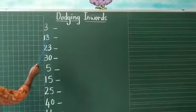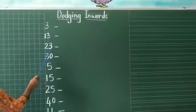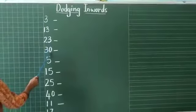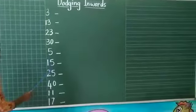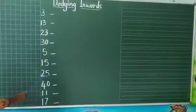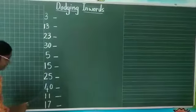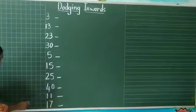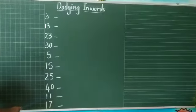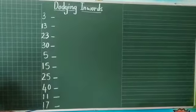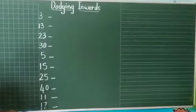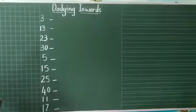3, 13, 23, 30, 5, 1, 5, 15, 2, 5, 25, 4, 0, 40, 1, 1, 11, 1, 7, 17.